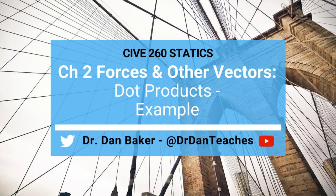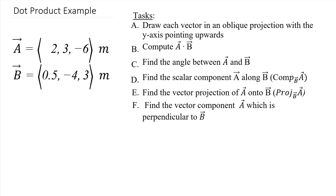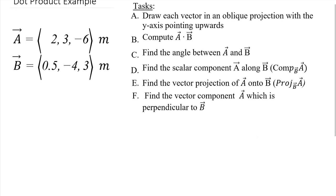Well, students of statics, this is Dr. Dan Baker. In today's video we're going to take a look at a pretty detailed example involving a dot product. We have a couple of position vectors in meters using XYZ Cartesian coordinates. We want to: draw the vectors, find the dot product, find the angle between them, find the scalar component of A along B, find the vector projection of A along B, and finally find the vector component of A which is perpendicular to B.